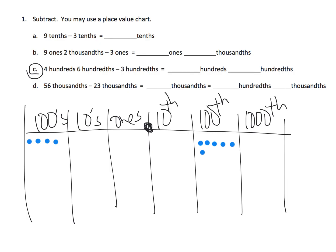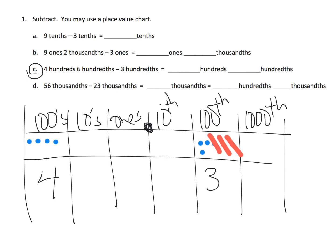Then it says to take away three hundredths. Well, that's pretty straightforward — that just says take away three of them: one, two, three. So what are we left with? We are left with four hundredths and three hundredths. And if we wanted to fill in the rest of those values, there it is — four hundred and three hundredths.